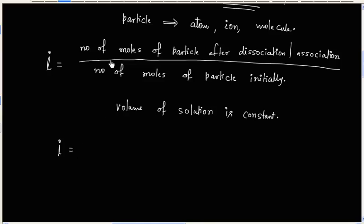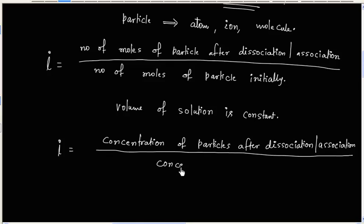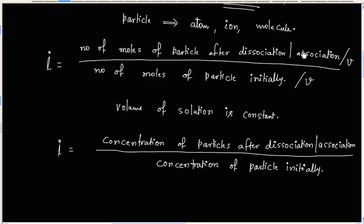When we divide by volume, number of moles becomes concentration. So i can also be written as concentration of particles after dissociation or association, divided by concentration of particles initially. We get this second form by dividing both the numerator and denominator of the first equation by volume.